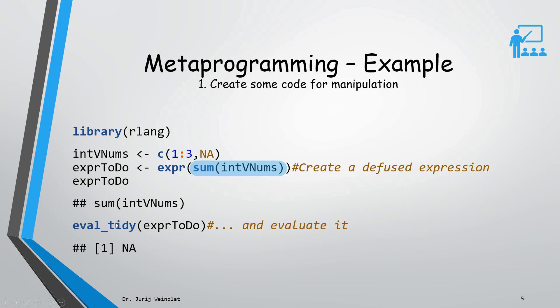After that we evaluate it using eval_tidy, which is also a method from rlang. Now we see the result, which is NA because if we calculate the sum and at least one is NA, the entire sum is NA. Remember we had the sum expression because on the next slide we're going to manipulate it.